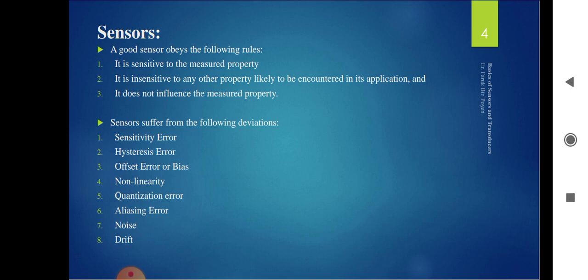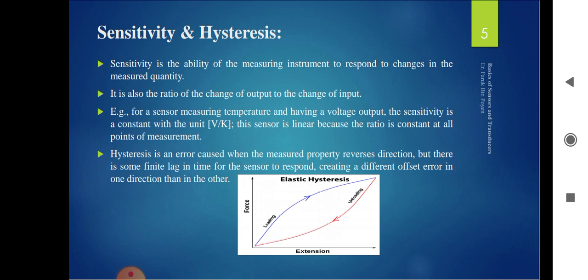There are some disadvantages and errors in sensors. Hysteresis error occurs when magnetic material is used in manufacturing — it represents the loss in magnetic materials. Offset error or bias error will also be present. Non-linearity may sometimes occur. Quantization errors related to noise, drift, and aliasing errors are also there. However, nowadays sensors are manufactured in a way that takes care of avoiding all these types of errors.